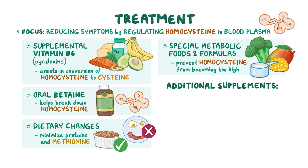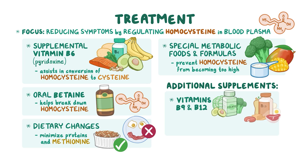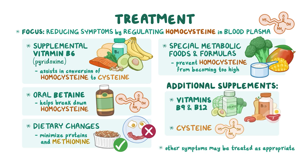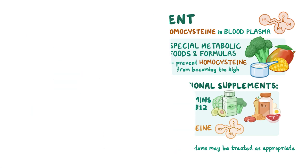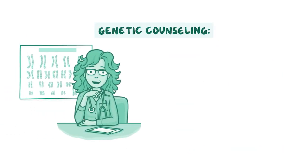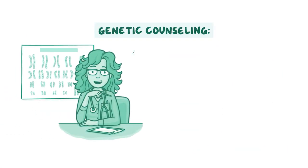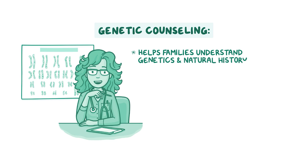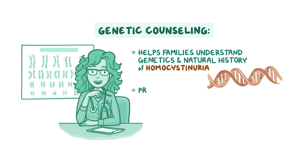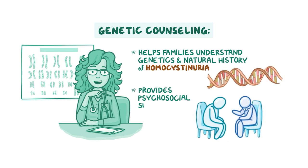Additional supplements may be recommended, including vitamins B9 and B12, and less commonly, cysteine. Other symptoms may be treated as appropriate. Genetic counseling is recommended to help families understand the genetics and natural history of homocystinuria and to provide psychosocial support.